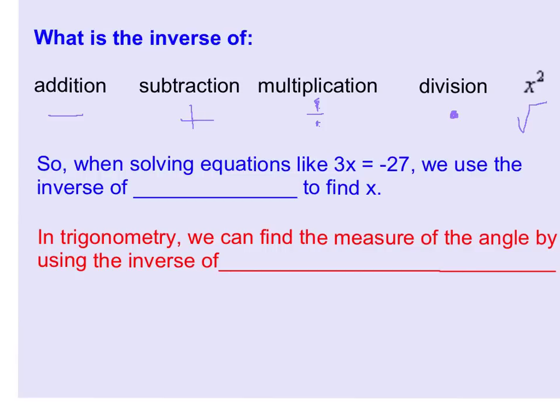So when solving equations like 3x equals negative 27, we use the inverse of multiplication to find x.